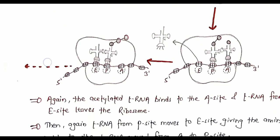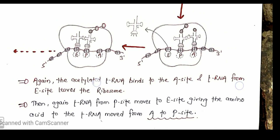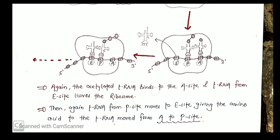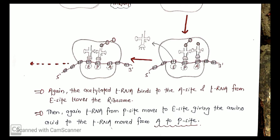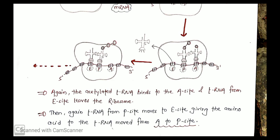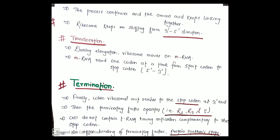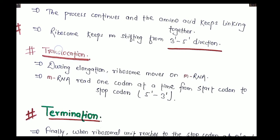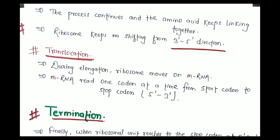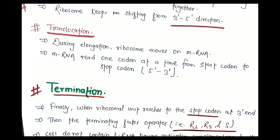The charged tRNA binds to the A site, the tRNA from the E site leaves the ribosome, then the tRNA from the P site moves to the E site, giving the amino acid to the tRNA that moved from A to P. The amino acids keep linking together and the ribosome keeps shifting in the 3' to 5' direction — this movement of the ribosome on mRNA is called translocation.